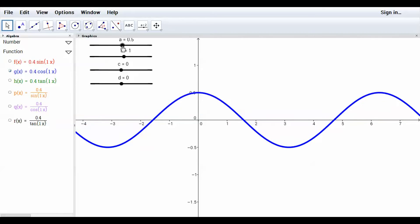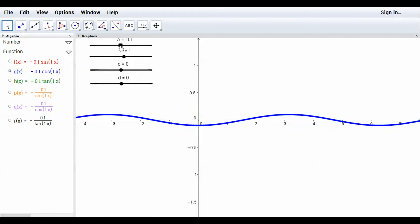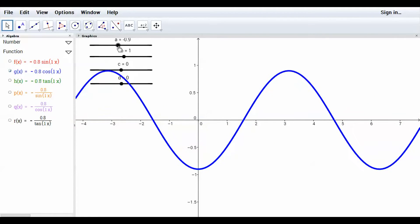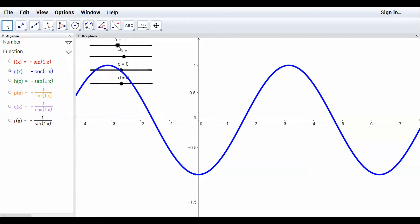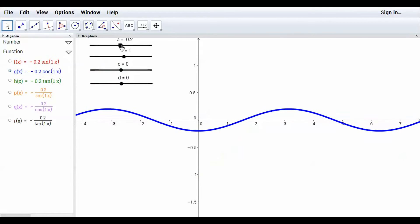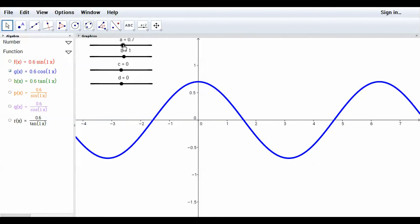And if I make that A value negative, now all of a sudden I've got a reflection. So there's the cosine reflected. And over here, you can see the algebra view, it's negative cosine. Let me put that back to one, my A value back to one.